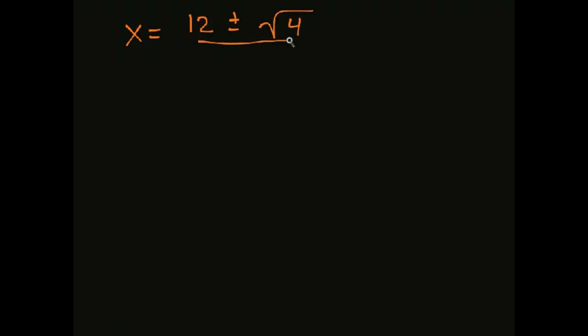So that simplifies to be 12 plus or minus the square root of 4 all over 2. So we get 12 plus or minus 2 over 2. So those are 12 plus 2 over 2, which is 14 over 2, which gets me 7, and 12 minus 2 over 2, which is 10 over 2, which gets me 5.